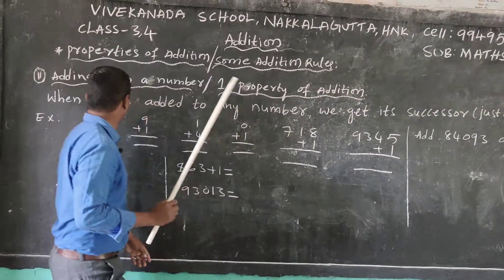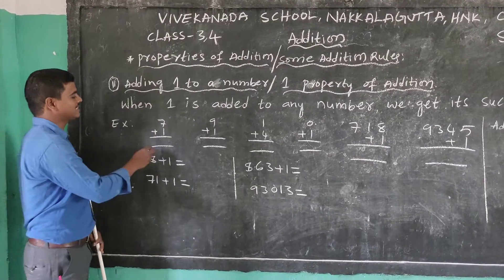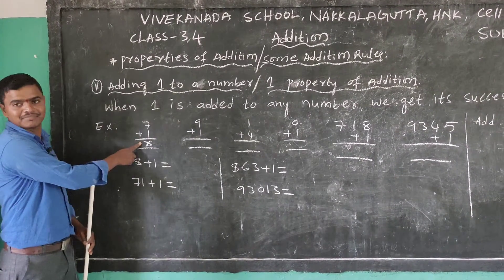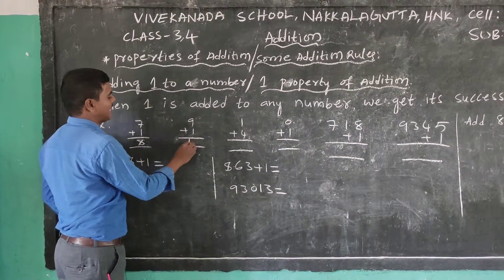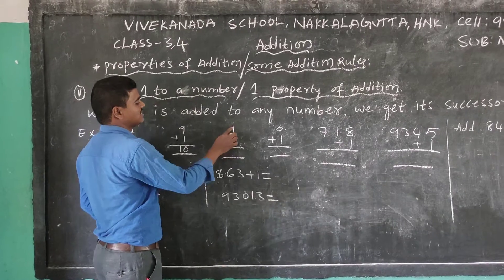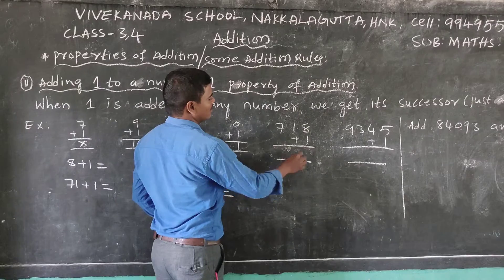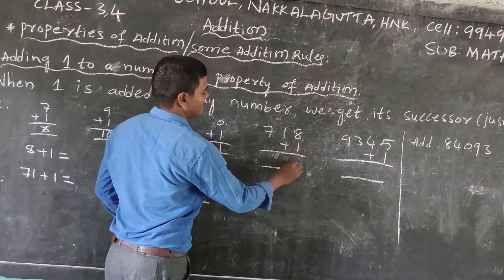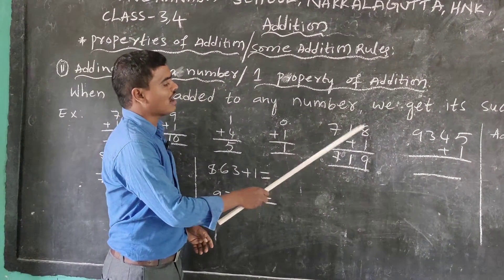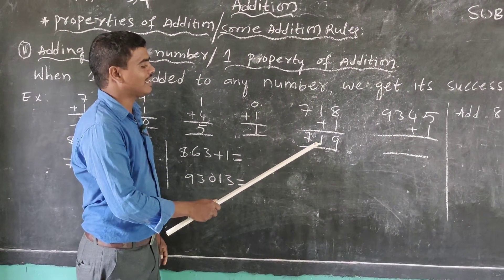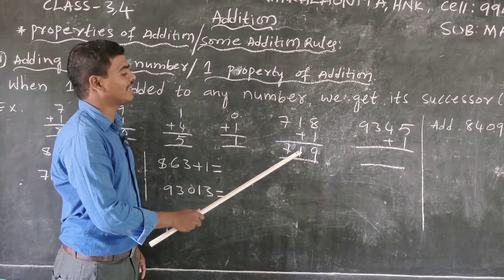Example: 1 plus 7 equals 8 — which is just the successor, the just-after number. Next: 1 plus 9 equals 10. Then 4 plus 1 equals 5. And 1 plus 0 equals 1. Next: 1 plus 8 equals 9. Then 780 plus 1 — the successor of 780 is 790.